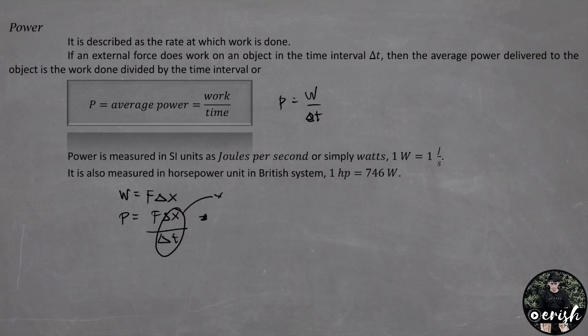And we all know that the displacement divided by the time interval is equal to the velocity. We can rewrite this equation in terms of the velocity. We have power equals force times the velocity. And according to this equation, average power is a constant force times the average velocity. The force F is the component of force in the direction of the average velocity.